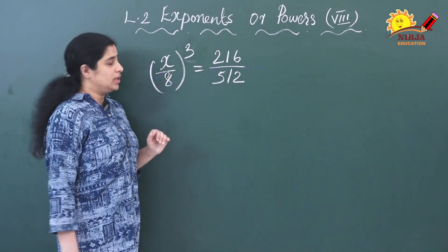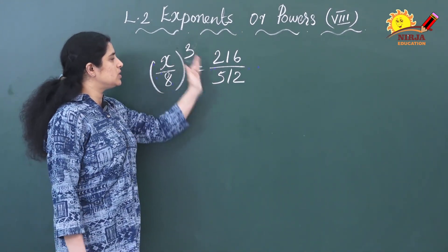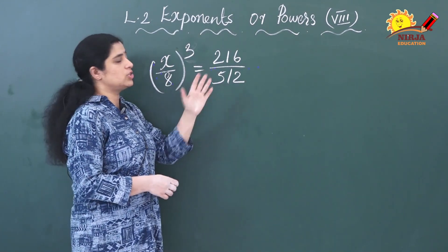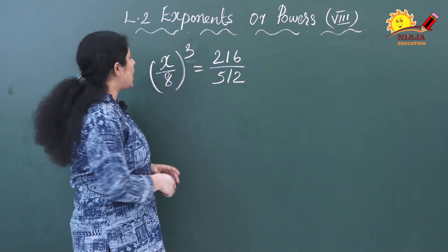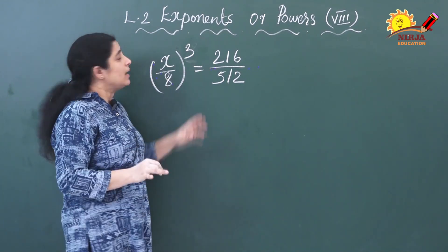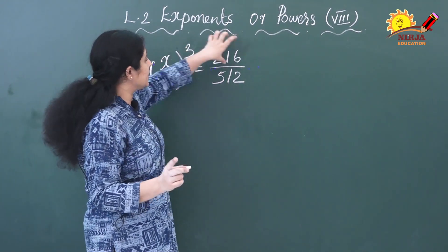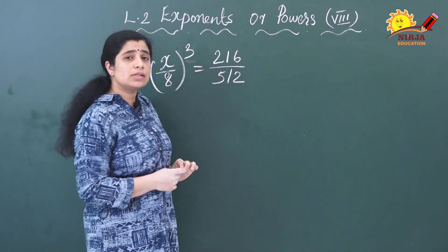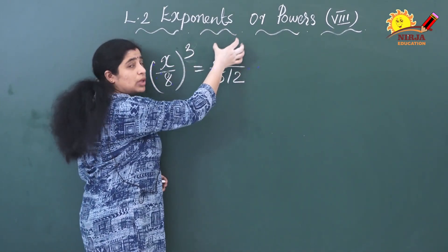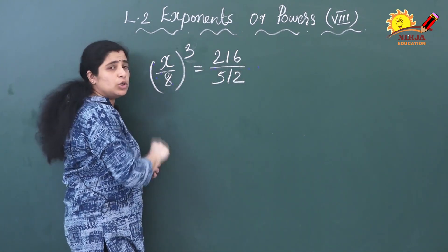I have written one question here: x by 8 whole raised to 3 is equal to 216 by 512. You have to find the value of x. You know that this number when multiplied 3 times gives 216, so what you have to do is find the prime factorization of 216.